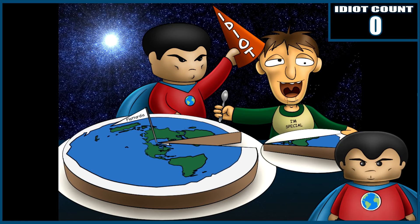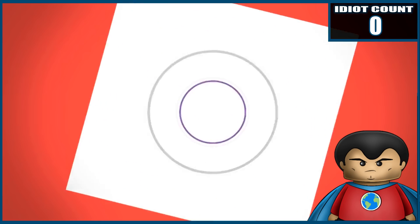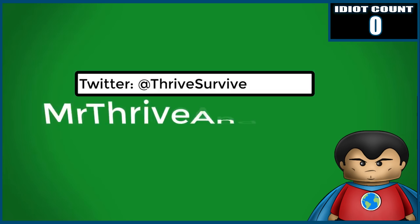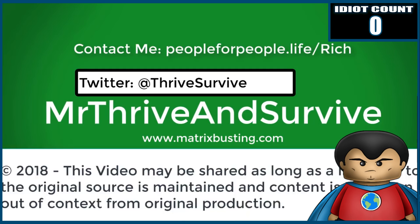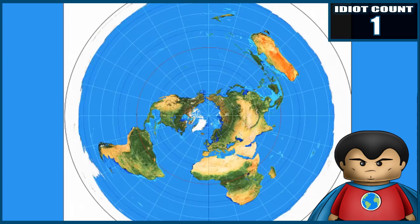Hey guys and welcome to today's idiot video. Now today we're going to be discussing a video put out by Mr. Thrive and Survive titled Sun Speed Doesn't Have to Change on Flat Earth. Which means Mr. Thrive and Survive is either about to redefine what the circumference of a circle is or he's a fucking idiot. So let's begin.